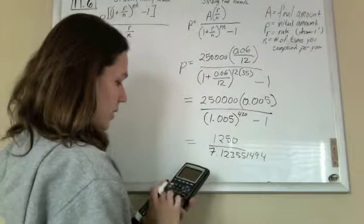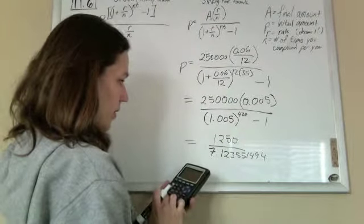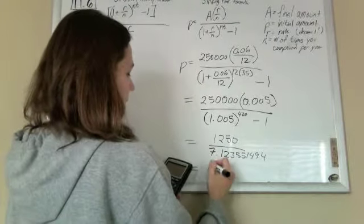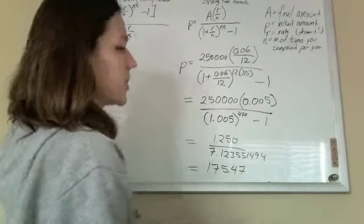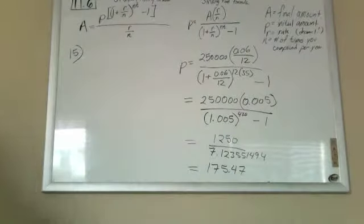1,250 divided by 7.123551494, and I'll get 175.47. Let me just check that. Make sure I didn't lose a zero this time.